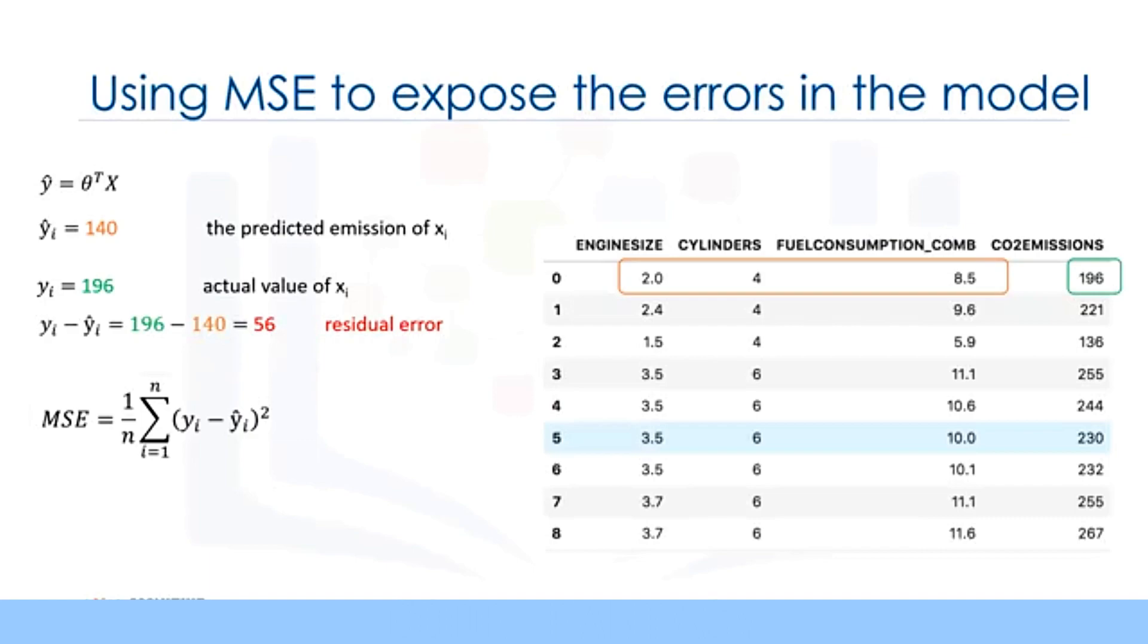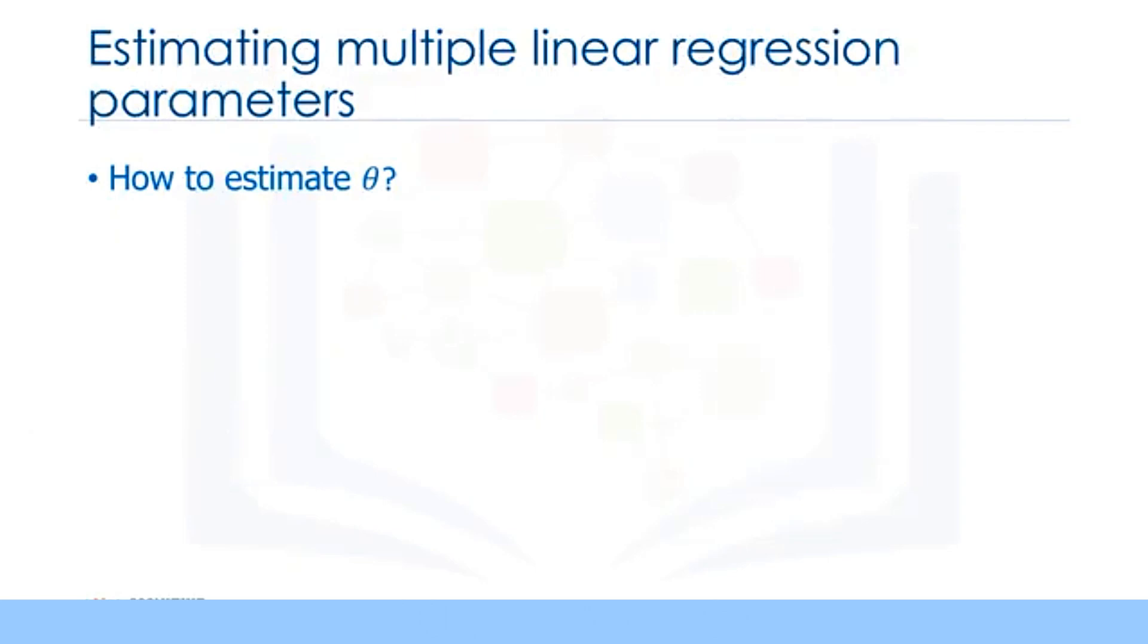The best model for our dataset is the one with minimum error for all prediction values. So the objective of multiple linear regression is to minimize the MSE equation. To minimize it, we should find the best parameters theta. But how? Okay, how do we find the parameter or coefficients for multiple linear regression? There are many ways to estimate the value of these coefficients. However, the most common methods are the ordinary least squares and optimization approach.